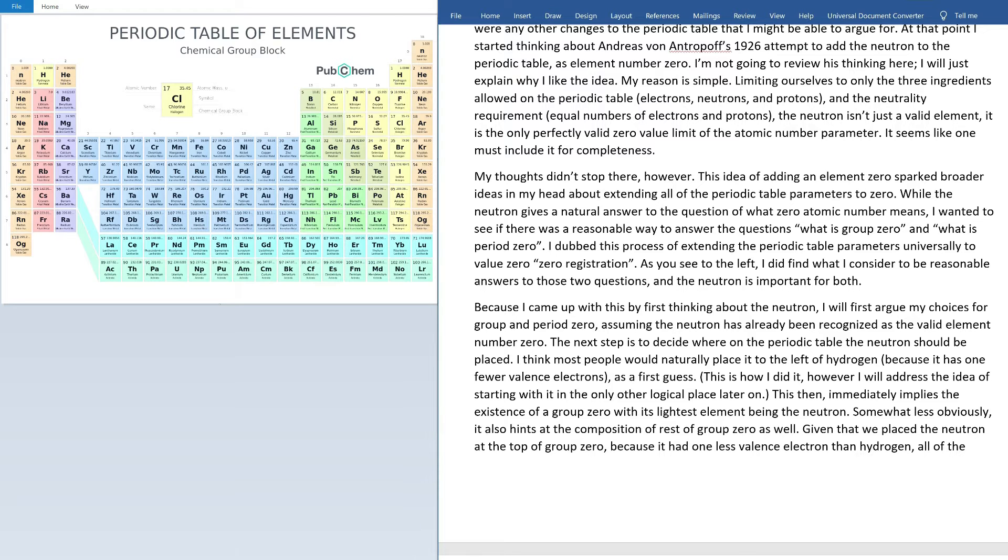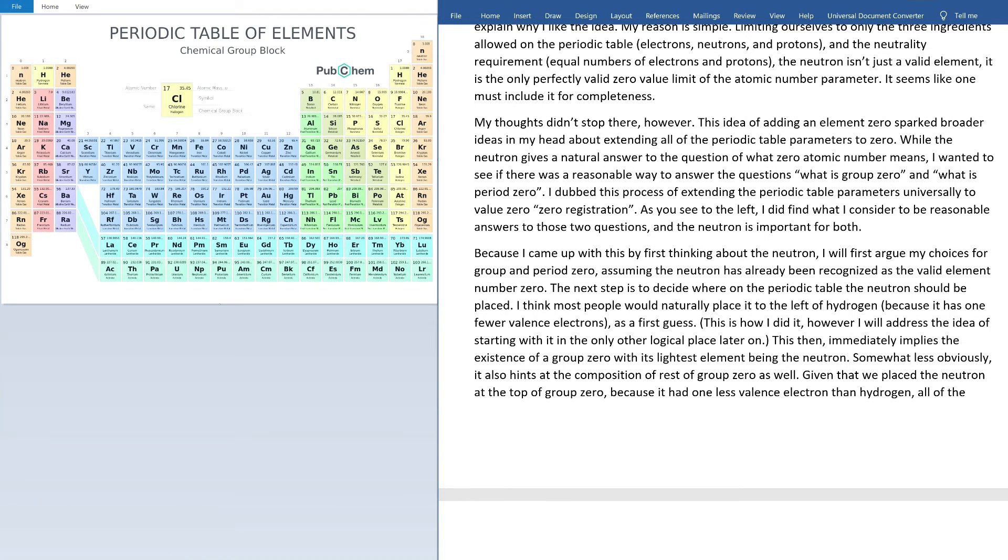My thoughts didn't stop here, however. This idea of adding an element zero sparked broader ideas in my head about extending all of the periodic table parameters to zero. While the neutron gives a natural answer to the question of what zero atomic number means, I wanted to see if there was a reasonable way to answer the questions what is group zero and what is period zero. I dubbed this process of extending the periodic table parameters universally to value zero, zero registration. As you see to the left, I did find what I consider to be reasonable answers to these two questions, and the neutron is important for both.